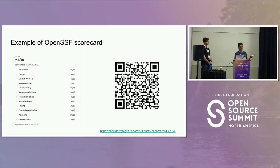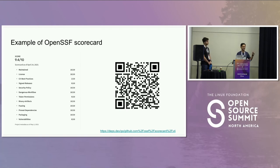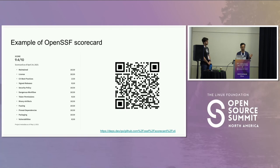What Scorecard provides — what you're seeing on the left side of the screen — is the actual Scorecard. It takes best practices and provides a score for any given open source project. It starts with 10 as the highest score, 0 being the lowest. On the right side is the QR code to go get the score from the web UI.